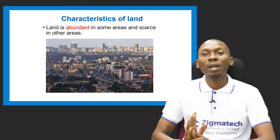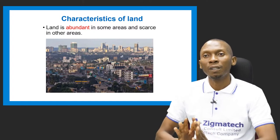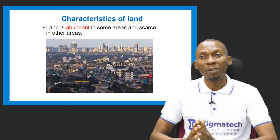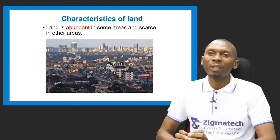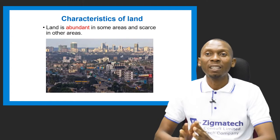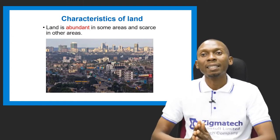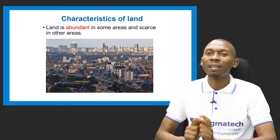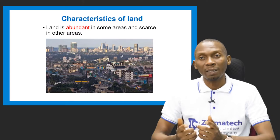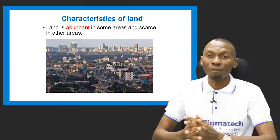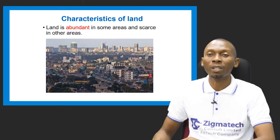Land is abundant in some areas and scarce in others. Some areas have enough land while riverine or aquatic areas have more water than land. Population level is also a factor that determines the level of abundance of land in a given area.